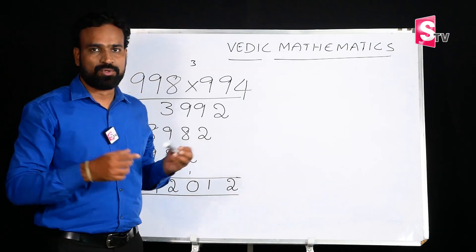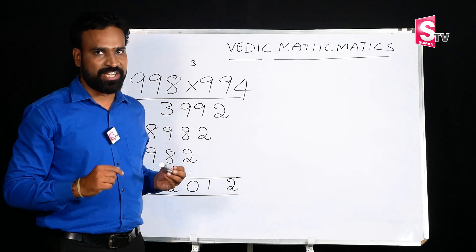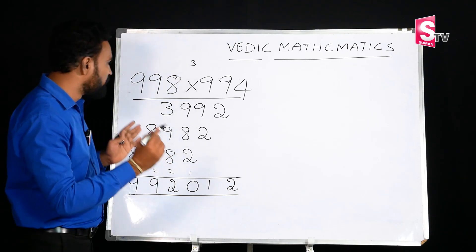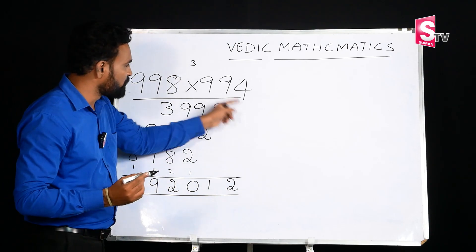Are you ready? Let's do an example. 998 into 994. The school method for multiplication — let's start.